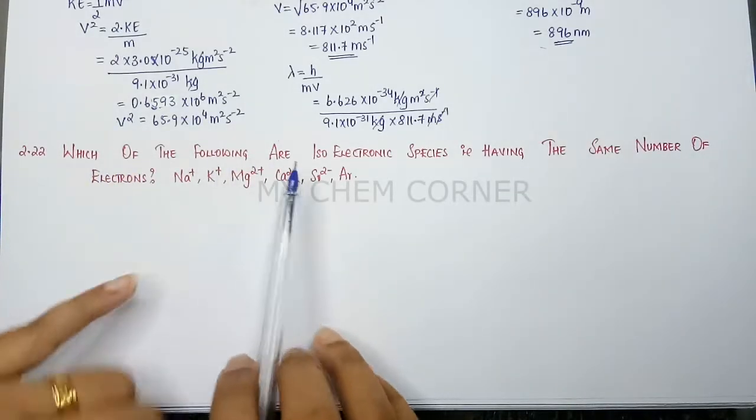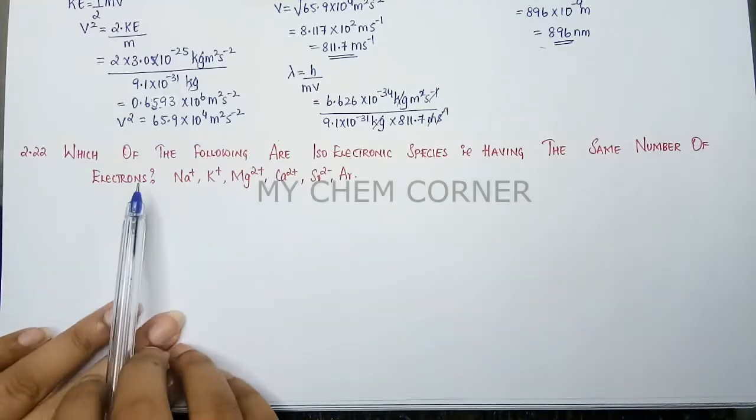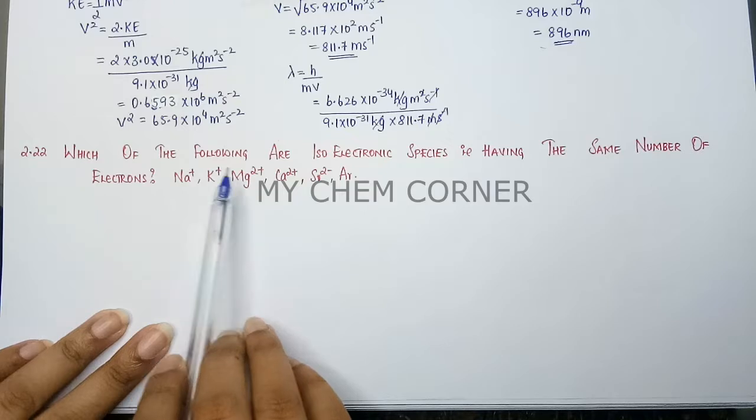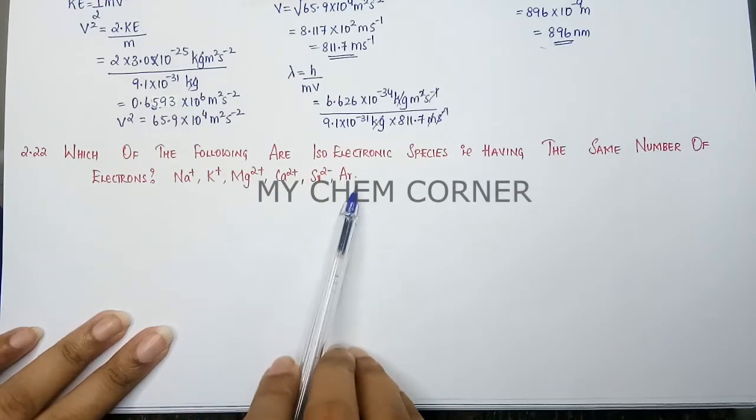Next question is which of the following are isoelectronic species, meaning having the same number of electrons. The elements given are sodium ion, potassium ion, magnesium ion, calcium ion, sulfide ion, and argon.